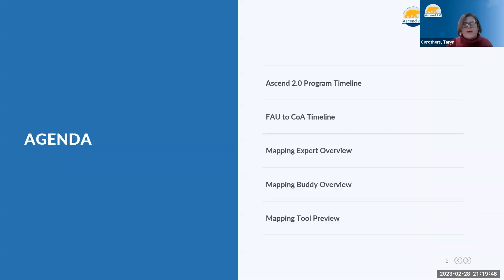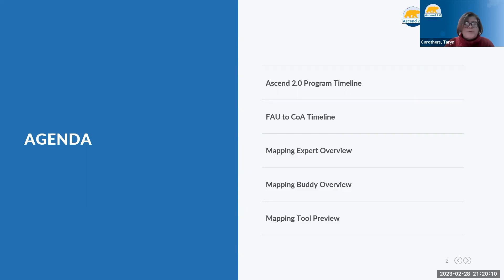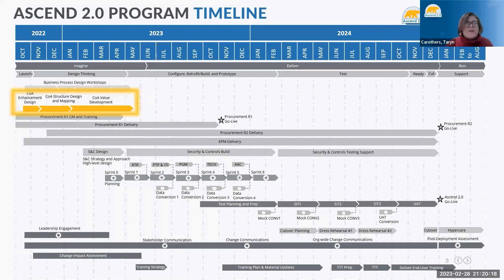Thank you for that introduction, Chris. I look forward to talking with each of you through this video. We have five major items that we're going to be reviewing today. The first is to talk about the Ascend 2.0 program timeline, which we really haven't talked about before. We're going to talk about the FAU to COA timeline, then mapping experts, mapping buddies, and then give a preview of the mapping tools. Let's start off with the Ascend 2.0 program timeline, which is an important context.